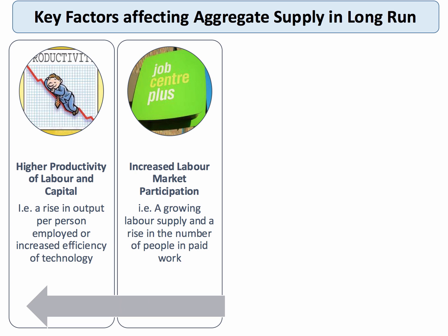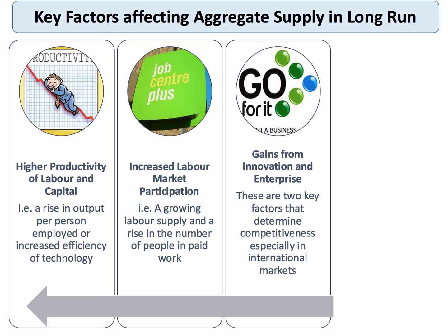A second important factor is the labour market participation rate. The big challenge for many countries is to get more of their working-age population actively searching for and able to find paid work. Countries which can successfully grow their labour supply and get more people into employment will tend to grow more quickly. A third factor relates to the supply-side benefits from successful innovation and from having an entrepreneurial culture — key drivers of competitiveness, particularly in global markets, especially if new businesses can scale up quickly to become global brands.